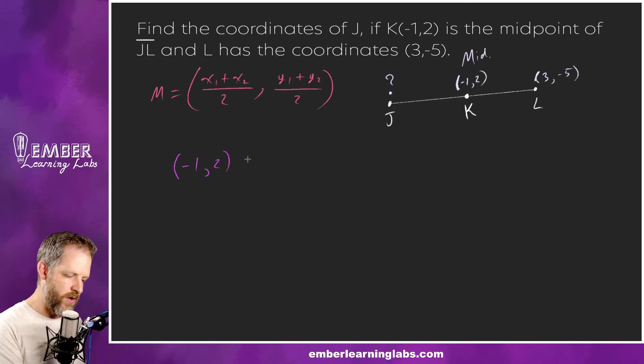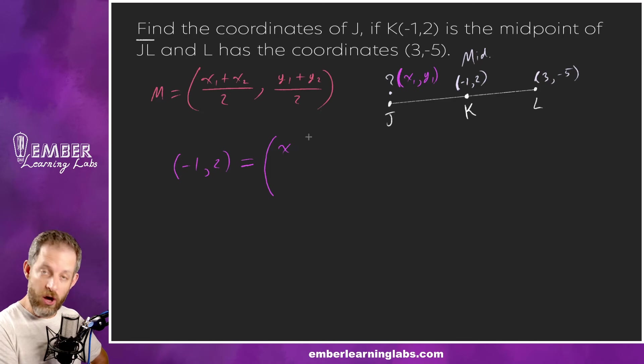Right, so that's the formula. But this time we're given M so we're going to set it up the same sort of way. We're going to say that negative one, two equals, let's see if we can walk through what's going on. We're going to call this J, we're going to label this as x1, y1, which makes these x2, y2. Right, so when we plug it into our big formula, x1 is just x1, that's our unknown, plus x2 which is 3 over 2. Okay, so that's the first bit. And here, y1 is just y1 because we don't know it, plus y2 is negative 5, put that over 2.